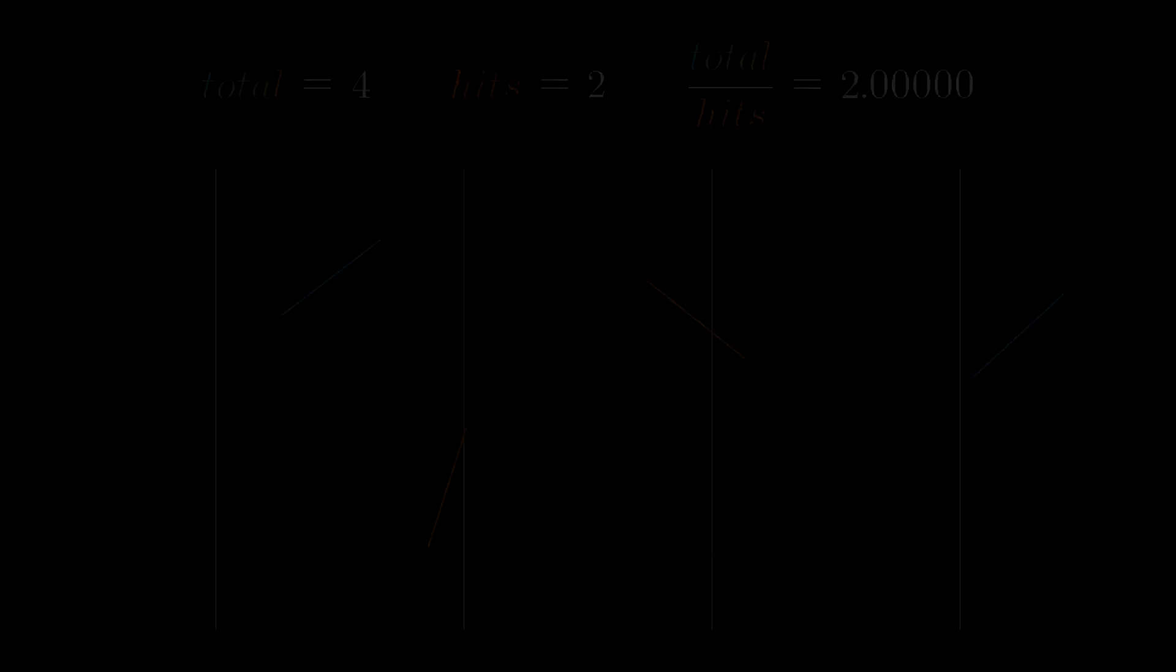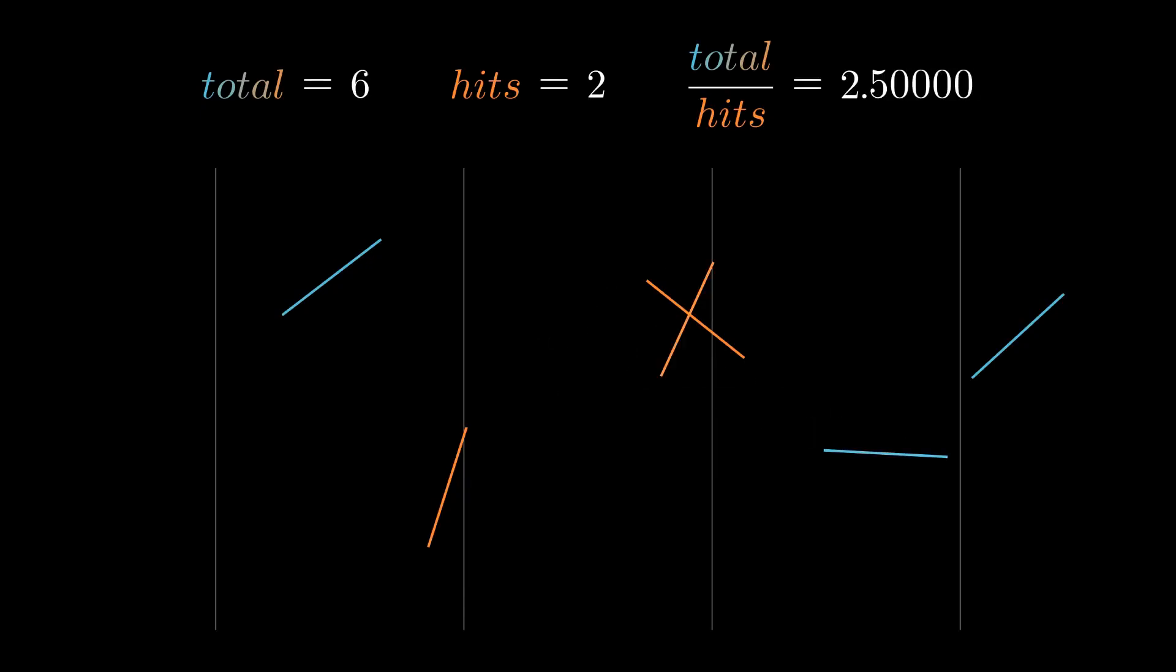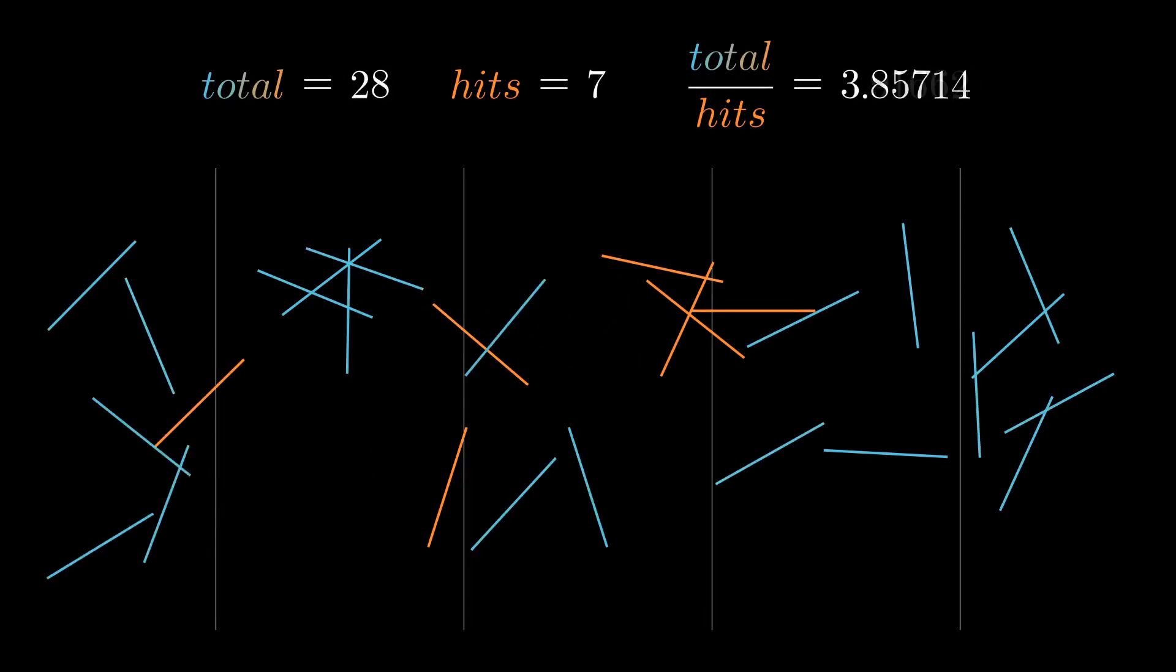One way to mitigate this issue is to increase the number of needles that we use. So I did what any normal person would do, and repeated the 100,000 test 100 times and took the average to see how close we can get to pi.